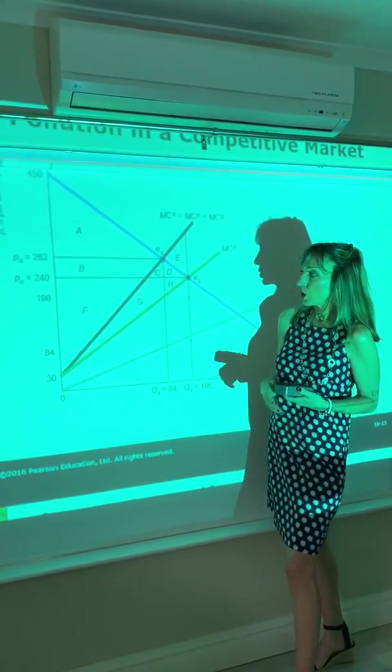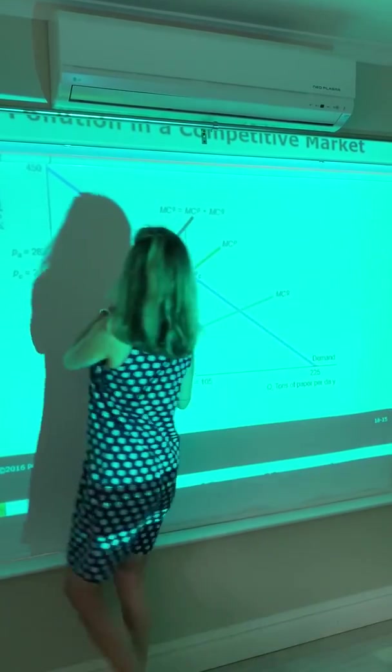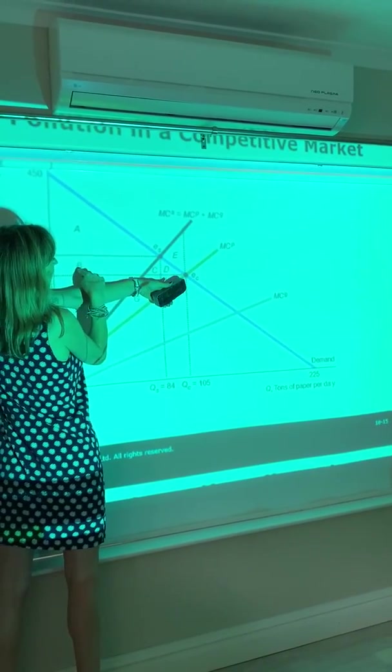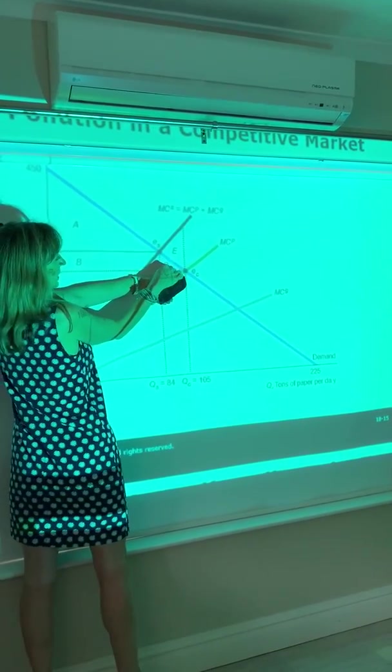What is your consumer surplus? It's going to be the area below your demand curve and above your price line: Areas A, B, C, and D.